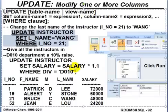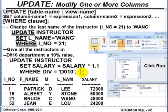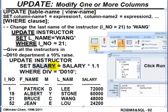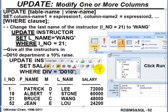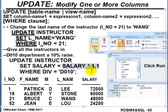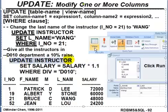Looking back at the syntax: this UPDATE statement means we want to change the salary of all the instructors in division D010 to be 10% more than their original salary — giving everybody in division D010 a 10% salary increase. In this case the UPDATE statement may impact multiple rows or multiple columns.